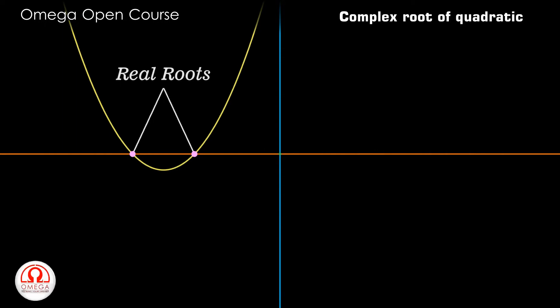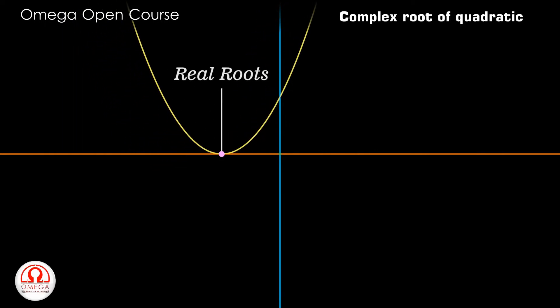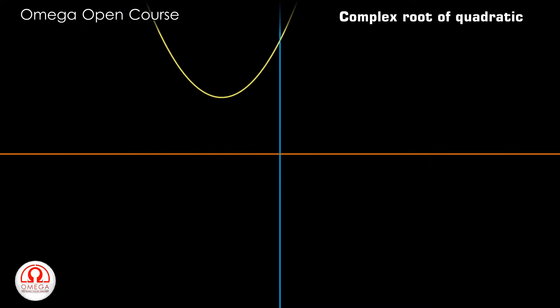When the graph touches the x-axis without intersecting it, we say that the equation has only one root, or that both the roots are equal. But what if the graph does not intersect the x-axis at all? In that case, we say that there are no real roots of the equation, or the roots are complex.